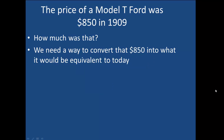A Model T Ford, in particular the Touring Model, was priced at $850 in 1909. This doesn't seem like much to us today. That's because prices tend to rise over time — there's been a lot of inflation between 1909 and today. However, earnings were a lot lower back then too, so $850 still could have represented a lot of money back then.